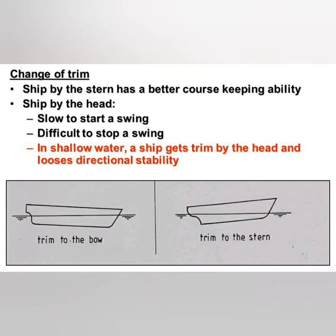You may also note that a ship trimmed by stern has better course keeping ability. A ship trimmed by head is slow to start a swing and difficult to stop a swing. In shallow waters, it is a bit difficult to maneuver the ship, and that is because directional stability is lost. In shallow waters, a ship gets trimmed by head and thus loses its directional stability.